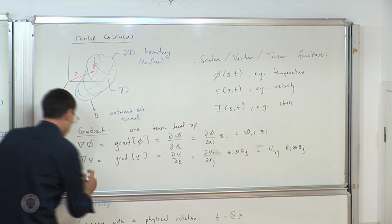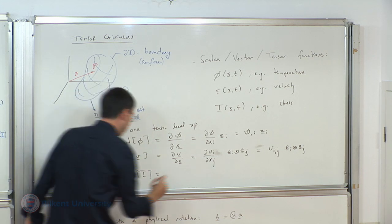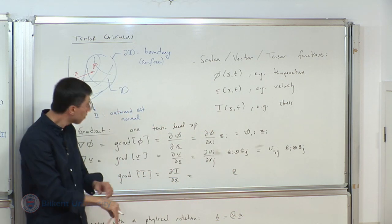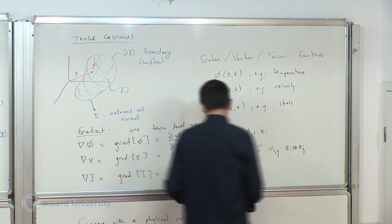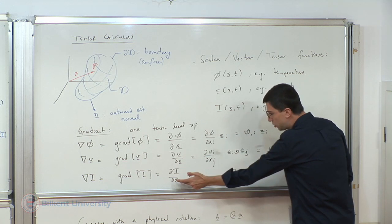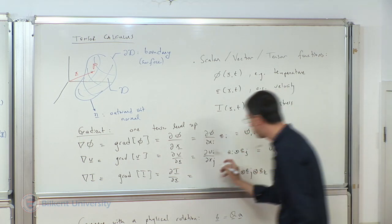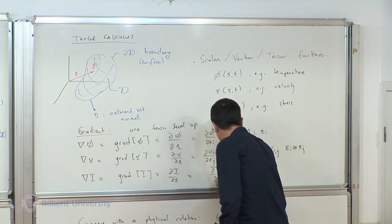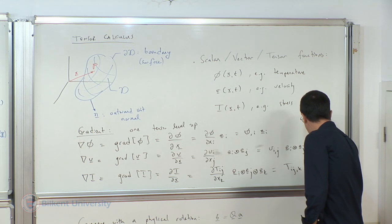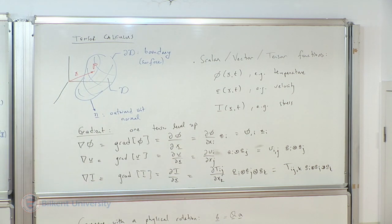You can also take the gradient of a tensor T, giving del T over del x, which is our first encounter with a third-order tensor. The basis becomes e_i tensor e_j tensor e_k, with components del T_ij over del x_k, or compactly T_ij comma k times e_i tensor e_j tensor e_k. Starting with a second-order tensor, the gradient sends us one level up to a third-order tensor.